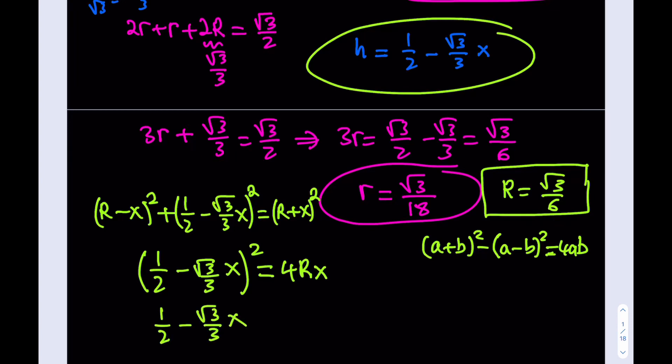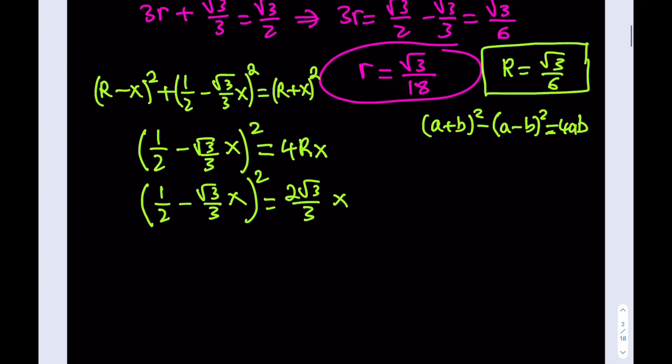Big r is equal to root 3 over 6. If you multiply by 4, you get 2 root 3 over 3, and that'll be multiplied by x, and don't forget the square. This is our quadratic equation, and we're going to use it to calculate x, and then we're going to put it all together. Let's expand this. This is going to give us 1 fourth minus, if you multiply these two and double, you should be getting root 3 over 3x plus 1 over 3 times x squared. And the right-hand side is just going to stay the same.